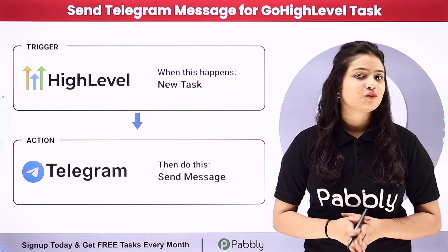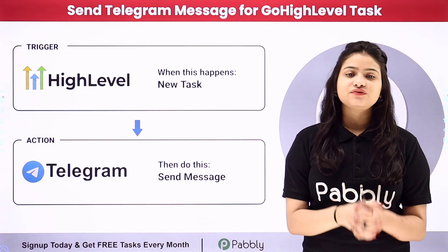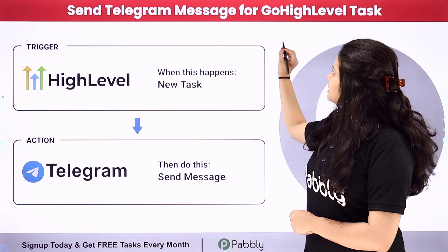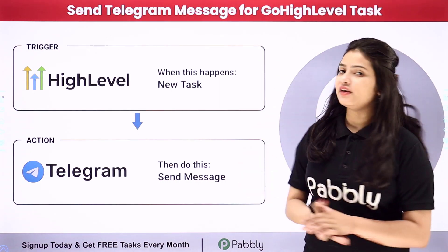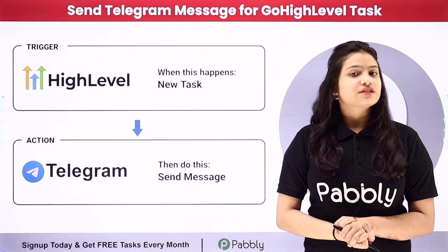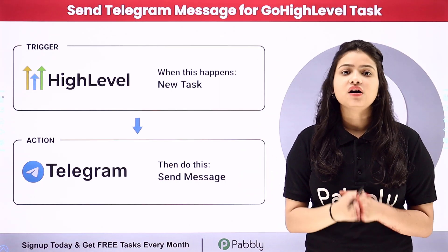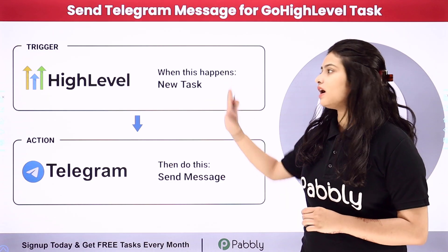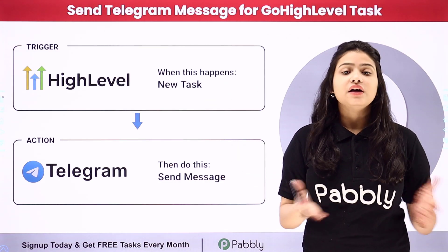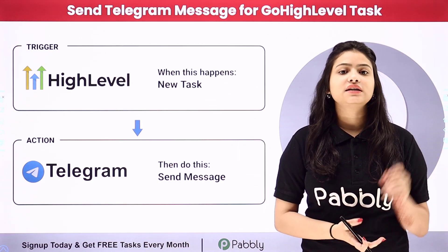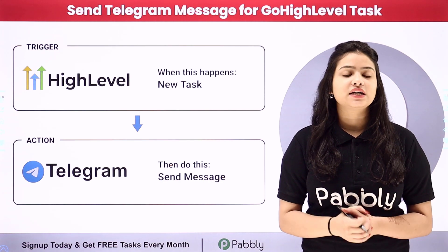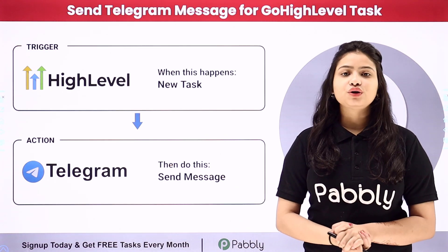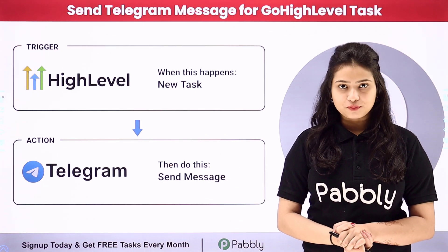Hello everyone, welcome back to Pabbly. In this video we are going to learn how to send a Telegram message for a Go High Level task. My objective is that whenever a new task is created in a Go High Level account for a particular person, then automatically the task detail should be sent as a message on my Telegram channel. So how are we going to automate this entire process?